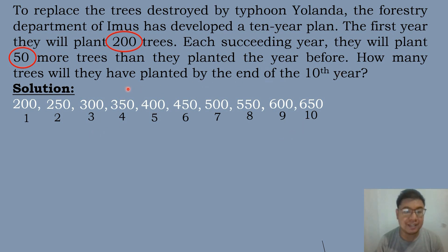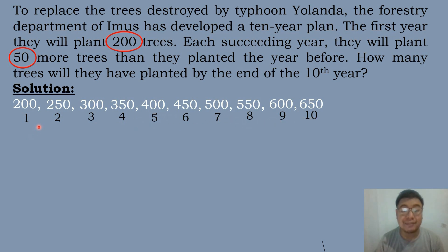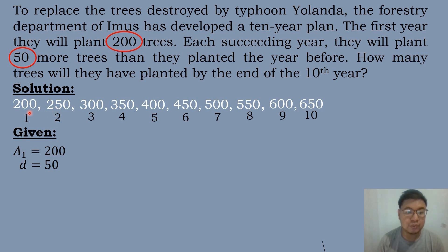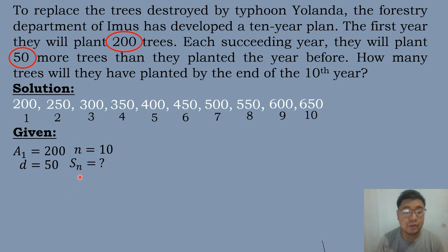The question is how many trees will they have planted by the end of the tenth year, meaning we compute the total number of trees planted over 10 years — the sum of the arithmetic series. We identify the given: a sub 1 equals 200, common difference d equals 50 (since 250 minus 200, 300 minus 250, and 350 minus 300 are all 50), and n equals 10. We will compute S sub 10.